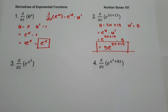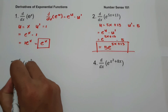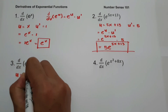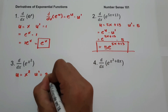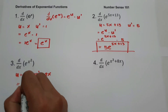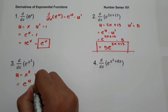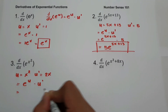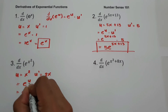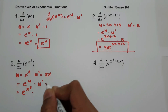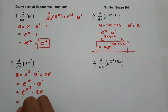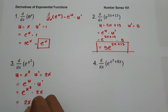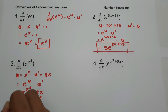On number 3, what is the derivative of e raised to x squared? The value of u is x squared, and u prime, the derivative of x squared, is 2x. So we have e raised to u multiplied by u prime. Substituting, we get e raised to x squared multiplied by 2x. Our final answer is 2x times e raised to x squared.